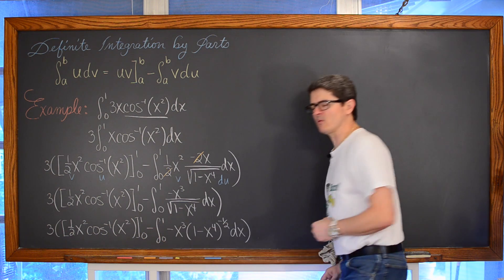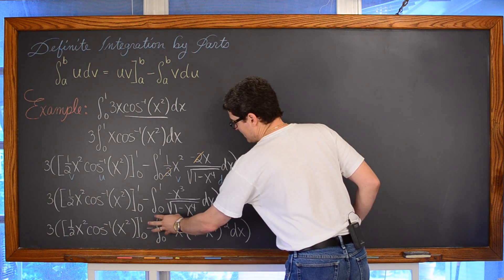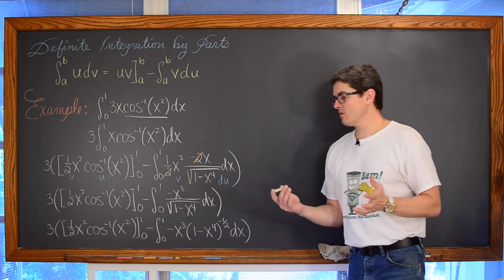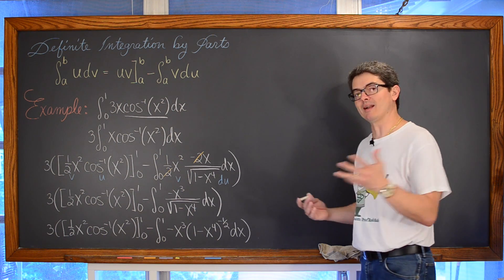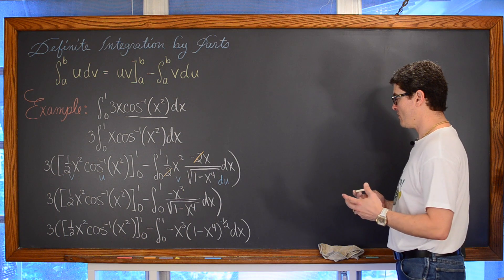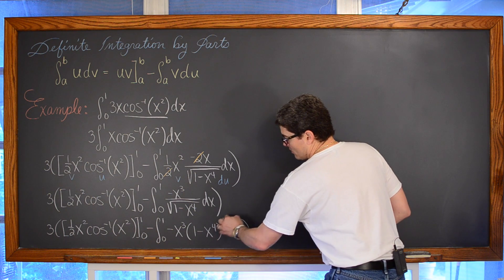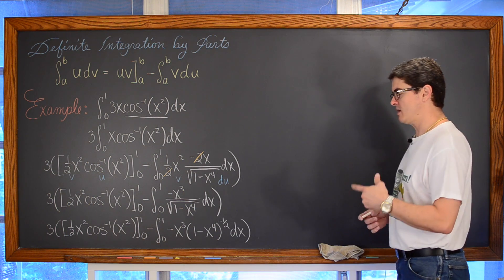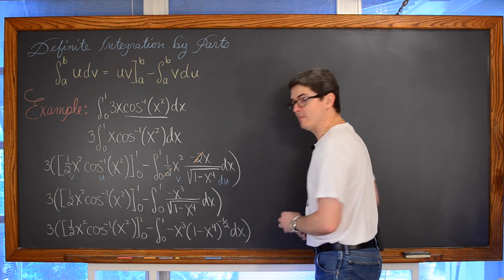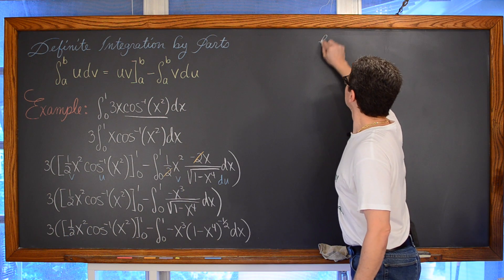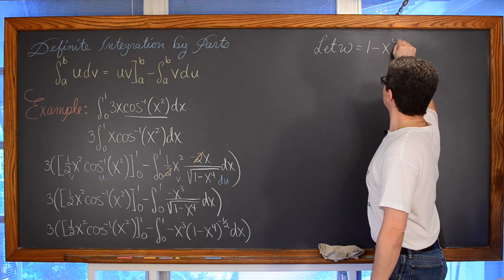Now, does this remaining definite integral require integration by parts again, or can we use a basic integration rule? There is a power attached here, so we can use the power rule. If we let w equal 1 minus x to the fourth, then dw equals negative 4x cubed dx. I can see that I already have a negative x cubed dx in my integrand.